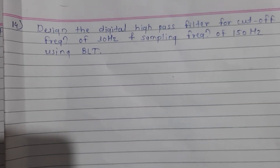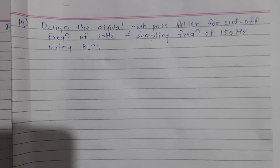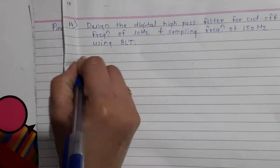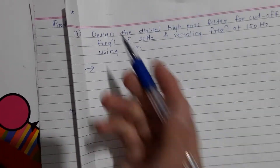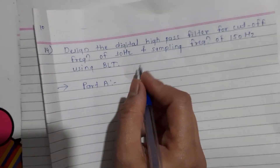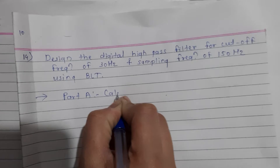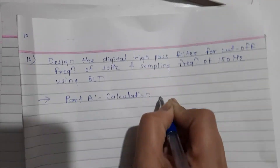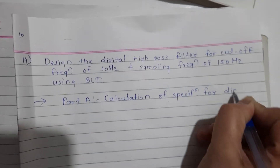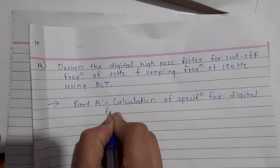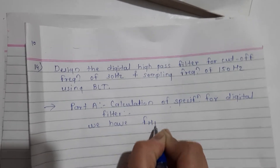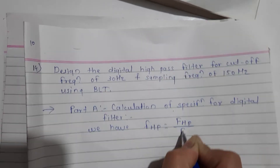Design a digital high-pass filter for a cutoff frequency of 30 Hz and sampling frequency of 150 Hz using BLT, that is bilinear transform. Part A of the problem is calculation of specifications for the digital filter. We have F_HP equal to capital F_HP divided by F_S.